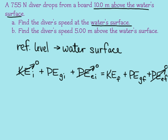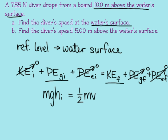When I get to the water's surface, that's my second point — I'm at the reference level. When we're at the reference level, there's no gravitational potential energy. So I'm left with initial gravitational potential energy equal to final kinetic energy. Now I'll plug in the equations for each of those: mgh initial equals one-half m v final squared.